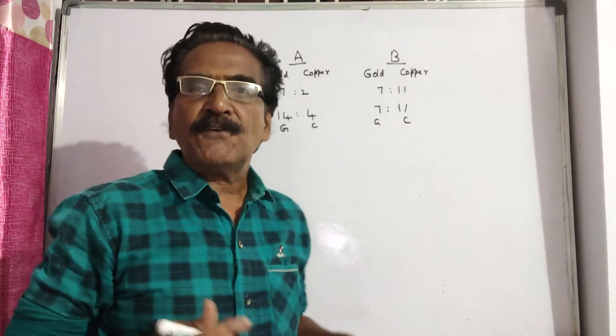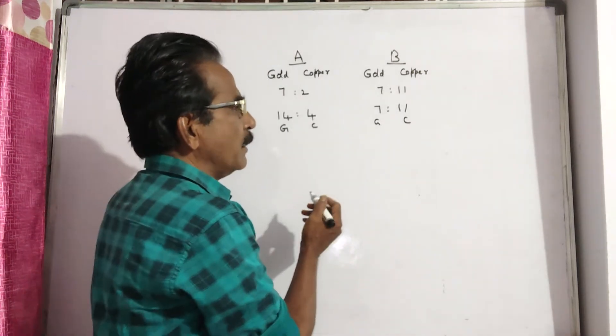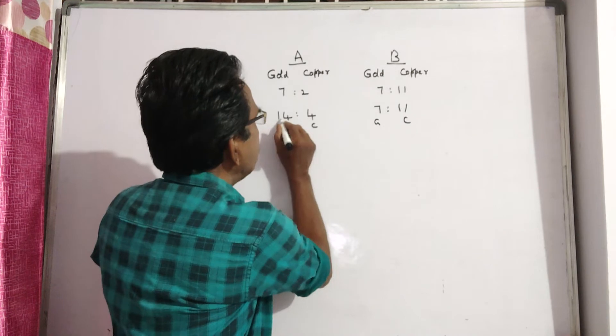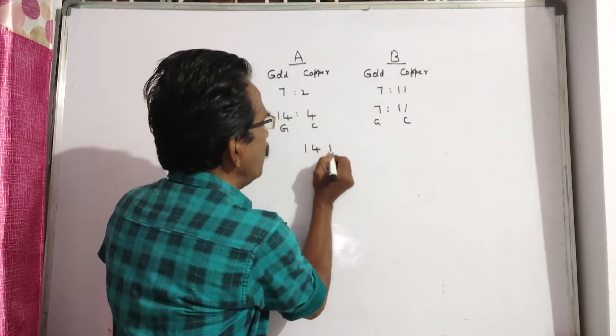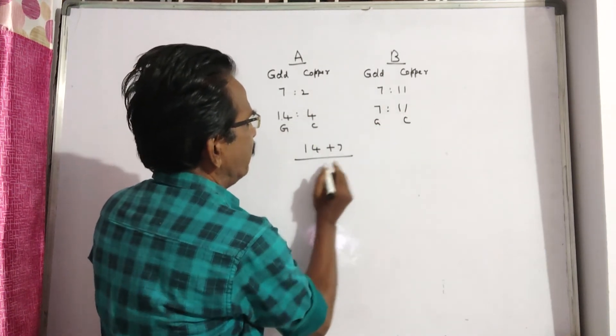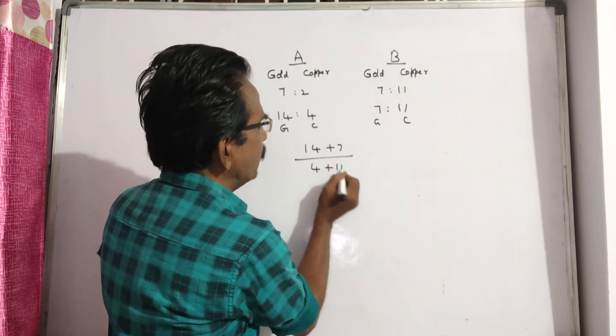Now the ratio of gold and copper in the new alloy C is equal to 14 plus 7. Gold, 14 plus 7 is gold by 4 plus 11 is copper. 4 plus 11 is copper.